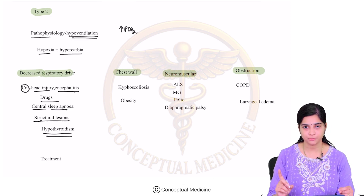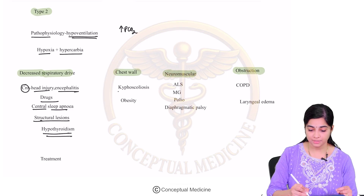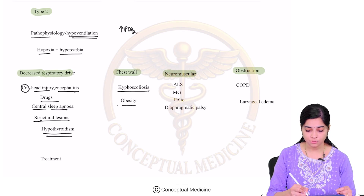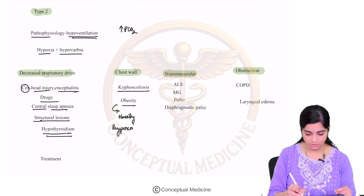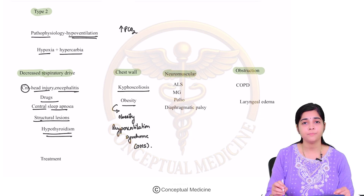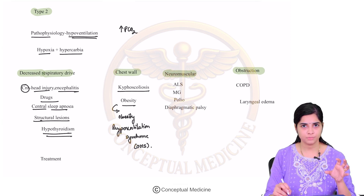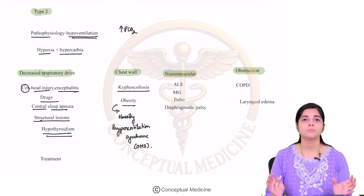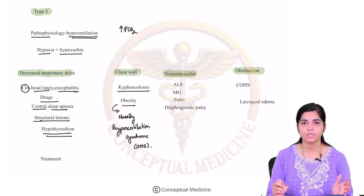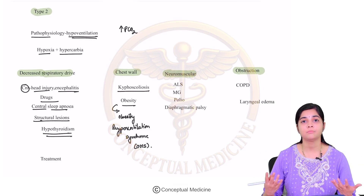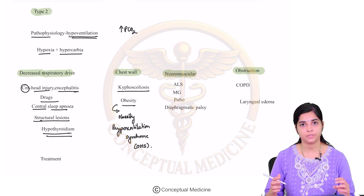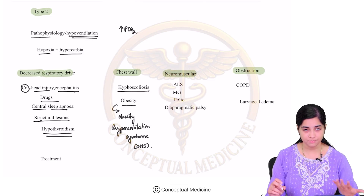Decreased respiratory drive is the first mechanism of type 2 respiratory failure. Then chest wall abnormalities like kyphoscoliosis or obesity — obesity causes carbon dioxide retention through obesity hypoventilation syndrome (OHS). In kyphoscoliosis or OHS, the chest wall cannot perform normal expansion and retraction. In obesity, increased abdominal fat prevents the chest wall from expanding well, so gaseous exchange is impaired and PCO2 retention occurs.